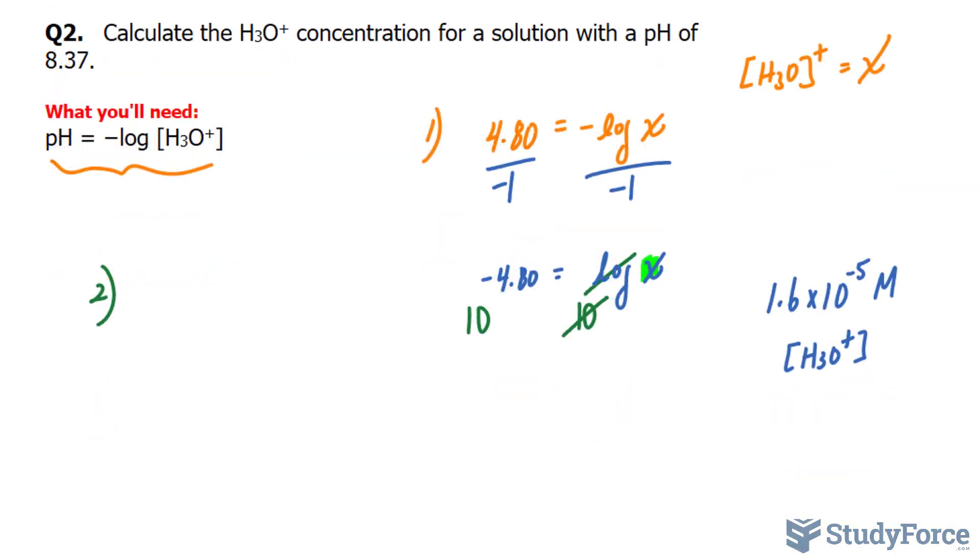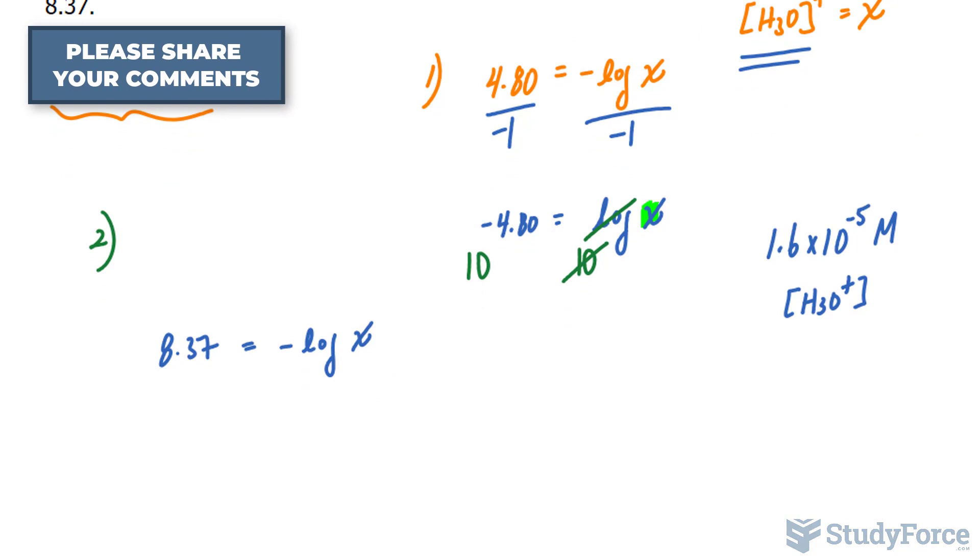Let's move on to question two. Calculate the hydronium concentration for a solution with a pH of 8.37. So this time the pH is basic. I'll substitute that number, 8.37, into where I see pH, and that is equal to negative log X, where X represents the hydronium concentration.